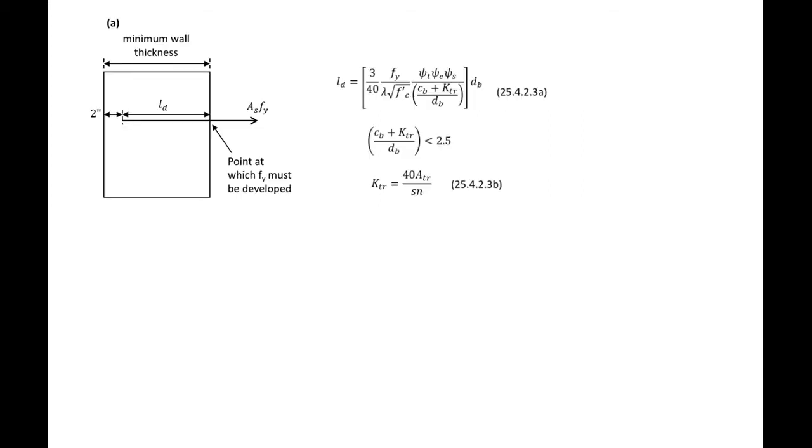First, looking at the development length required of the straight bar using the ACI detailed procedure, we can see we'll use our ACI procedure and we first need to figure out all of our different factors.